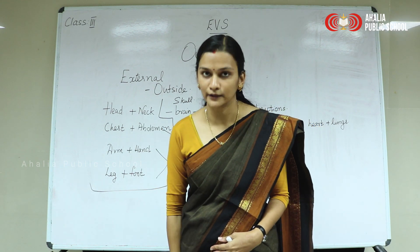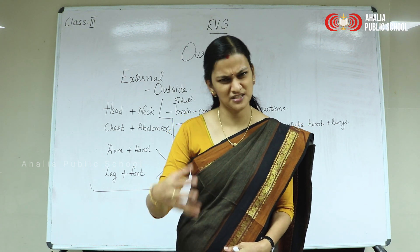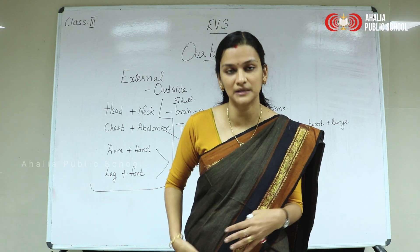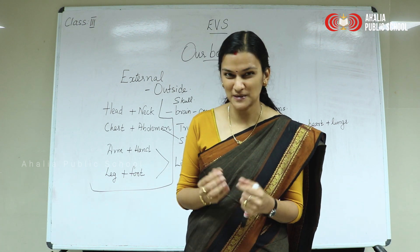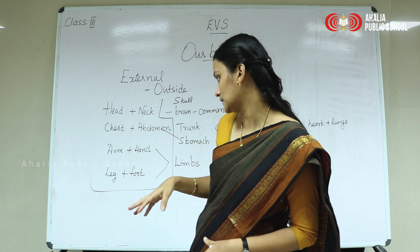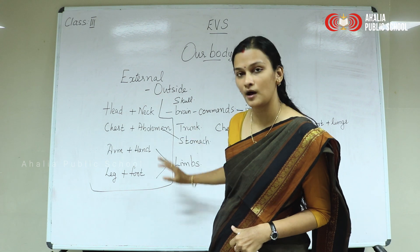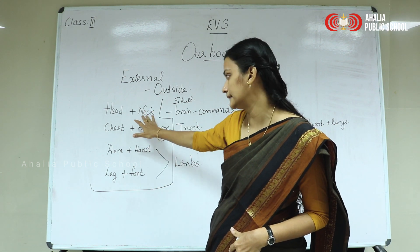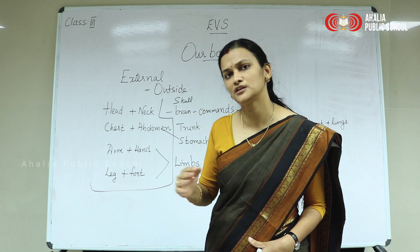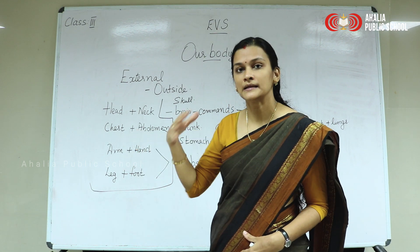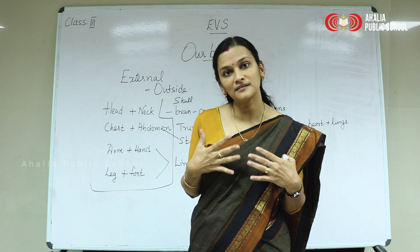Then the last one: the leg and the foot. Whatever is below your trunk — your thighs, the knees, the leg — when you walk, run, or dance you need this leg. The lowermost part is the foot where you have the toes. So these are the different parts you learn under external organs: the head and the neck, then the chest and abdomen coming in the trunk portion. The chest is the upper portion of the trunk, internally protected by the rib cage.